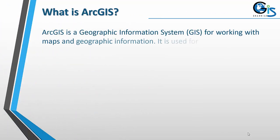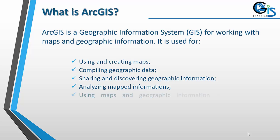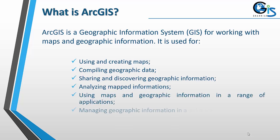What is ArcGIS? ArcGIS is a geographic information system for working with maps and geographic information. It is used for creating and using maps, compiling geographic data, sharing and discovering geographic information, analyzing mapped information, using maps and geographic information in a range of applications, managing geographic information in a database, and many more.